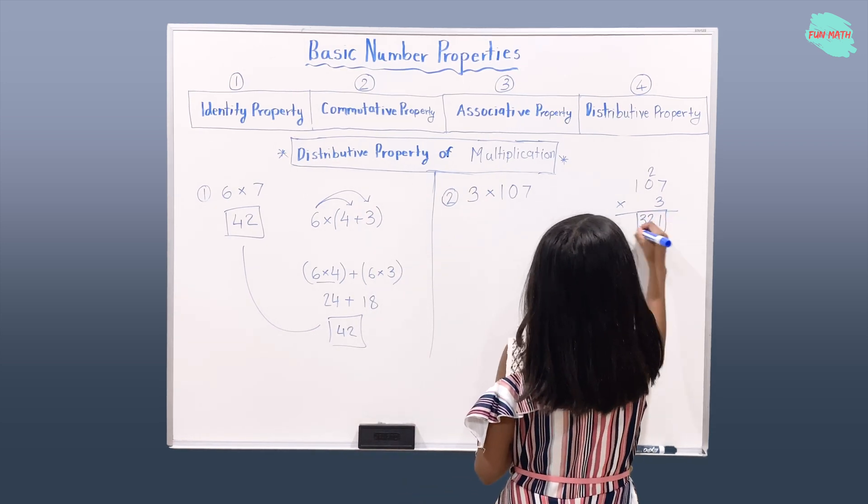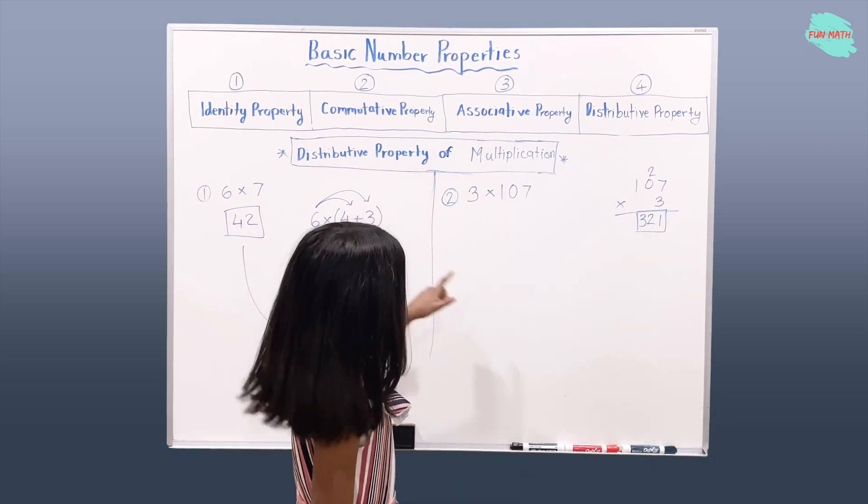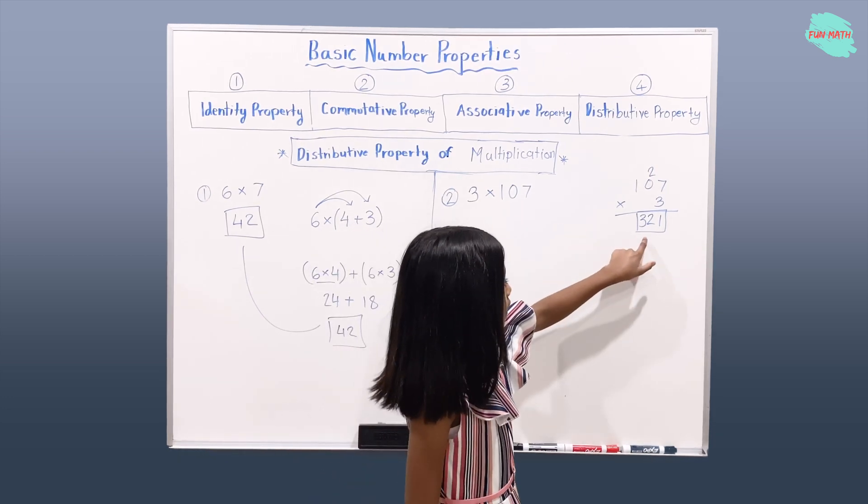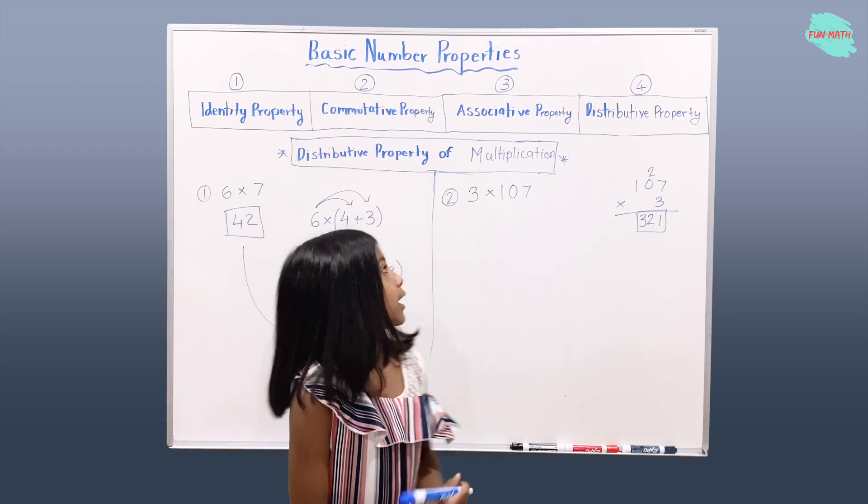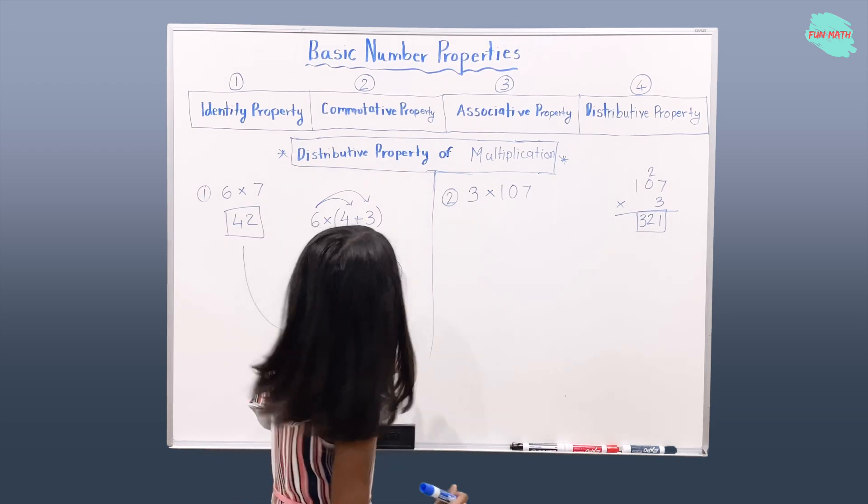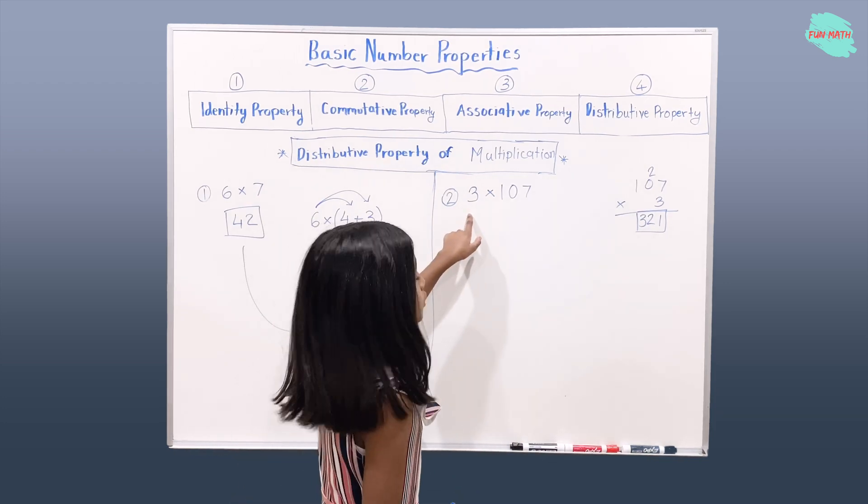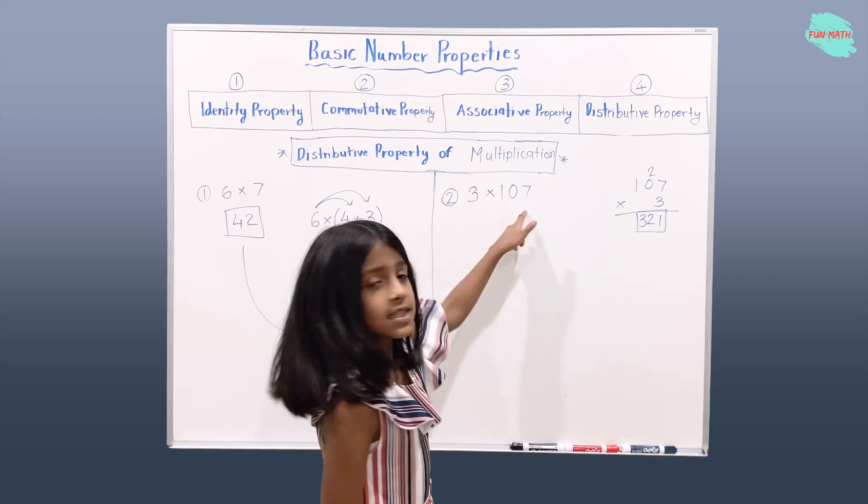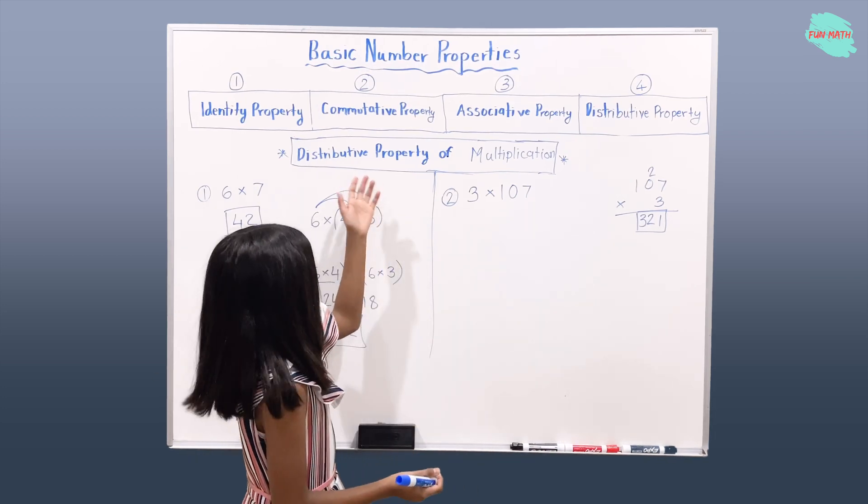And that means that 107 times 3 is 321. Okay, so now let's write 3 times 107 in the distributive property way.